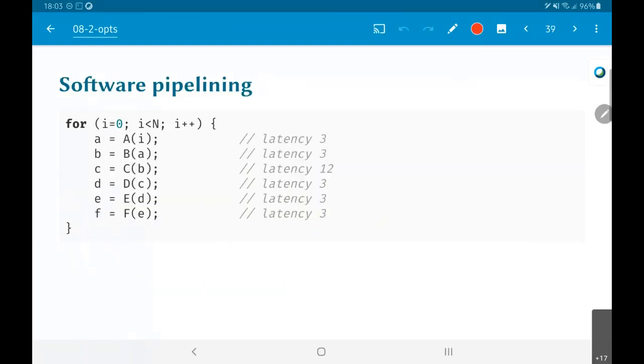So, moving on to this topic called software pipelining. Now, the assumption is that each of these functions A, B, C, capital A, B, C, D, E, F are some functions that need to execute on some hardware. So I basically have like one piece of hardware, one hardware processor, but A to F are pipelined functions.